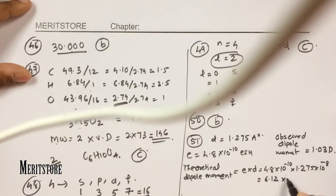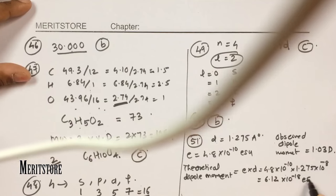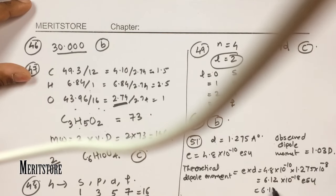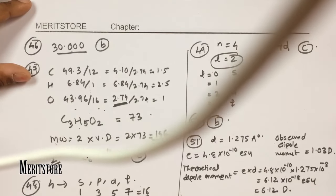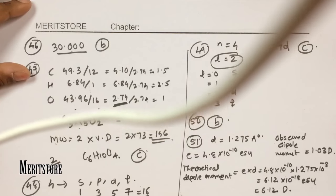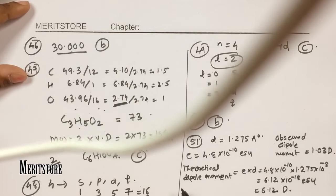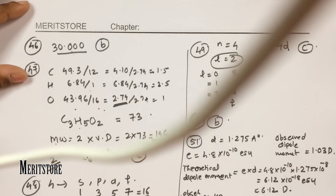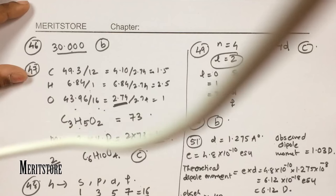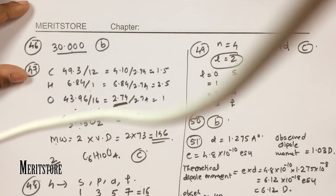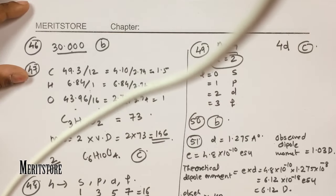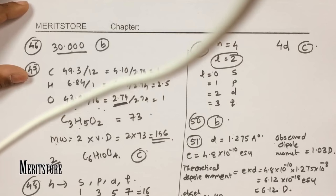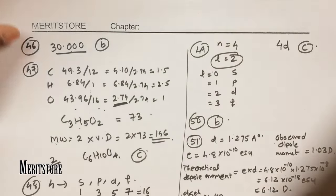The theoretical dipole moment comes out to be 6.12 × 10⁻¹⁸ ESU, which equals 6.12 D. The percentage ionic character is (observed/theoretical) × 100 = (1.03/6.12) × 100 = 16.83%. Hence option D.